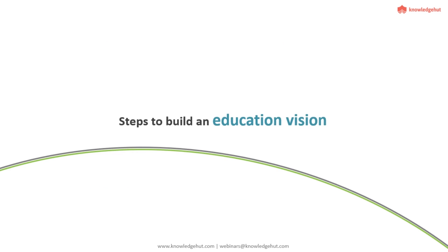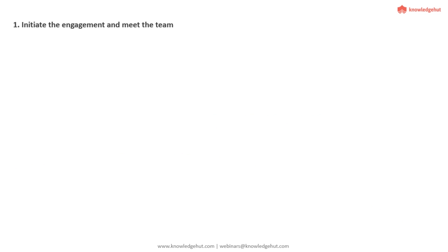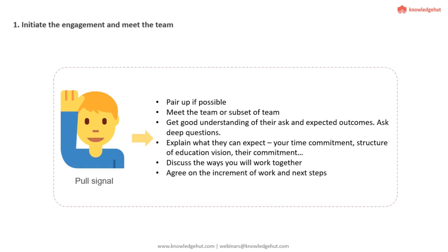Now that we understand the what and the why, let's look at the simple steps of how you can build an education vision. The first step is initiating the engagement and meeting with the team. Before you build an education vision, a team or individual reaches out to you with a pull signal — they come with some challenge or issue that they are trying to solve, and they come to you as a coach.